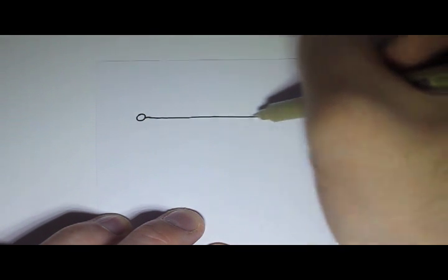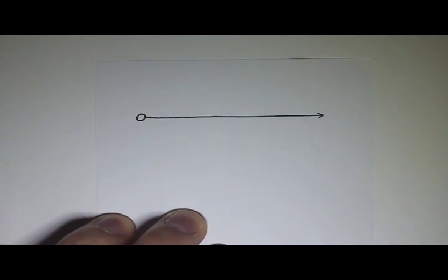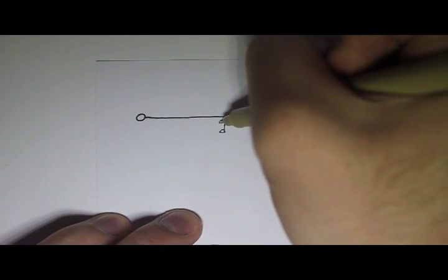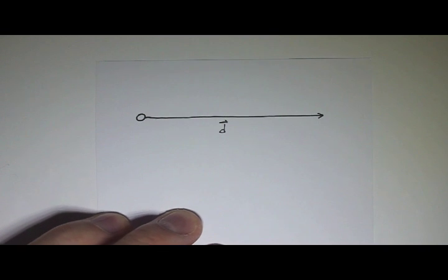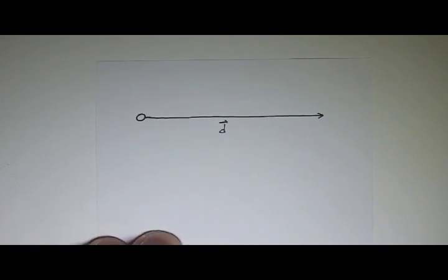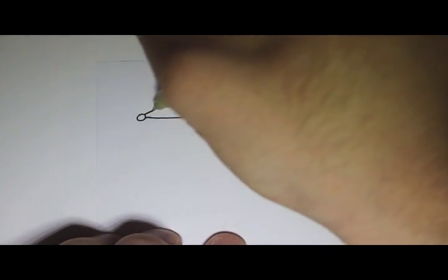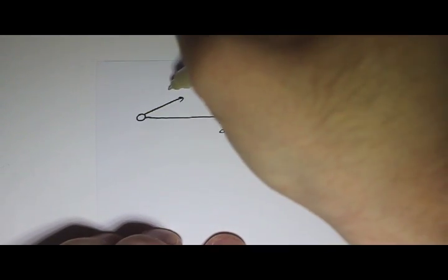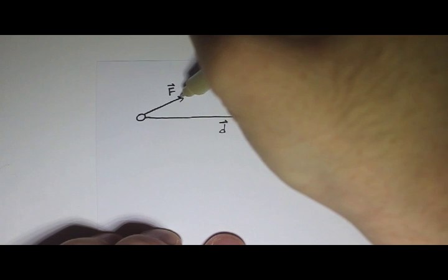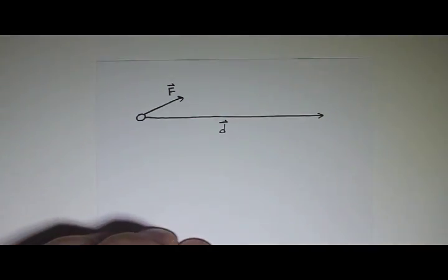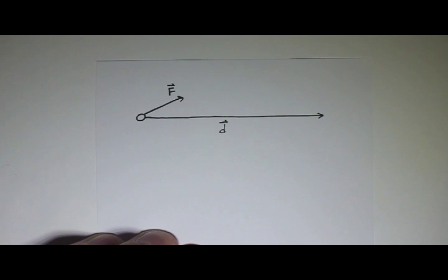So suppose I have a particle, here's my particle, and it's moving from here all the way over to here. That would be its displacement D, which is a vector. And maybe there's a force that's acting on it throughout its motion. We're going to assume it's a constant force, so here's our force, I'll call that force F. Remember, this force is constant in magnitude and direction, so that force always acts in that direction throughout the motion.